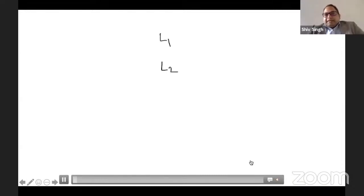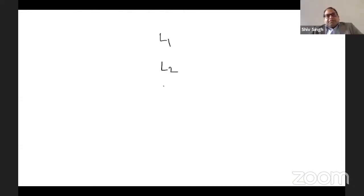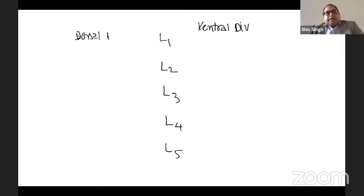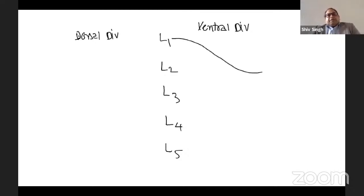The lumbar plexus takes origin from L2, L3, and L4. L4 and L5 form part of the lumbosacral trunk, and we can divide these into ventral and dorsal divisions. The femoral nerve takes origin from L2, L3, L4 dorsal divisions.